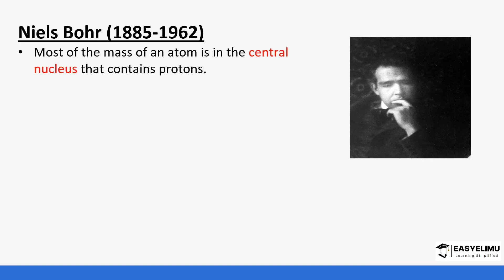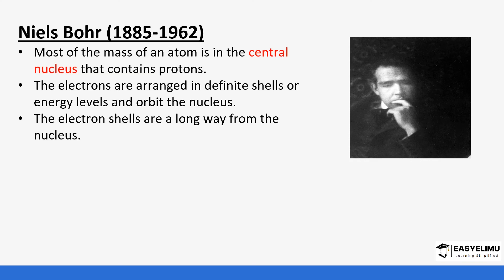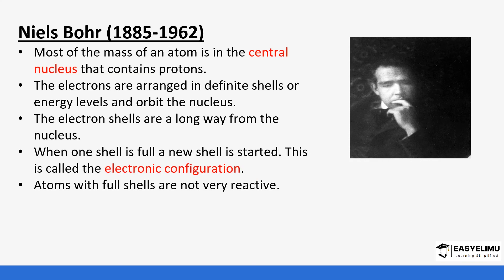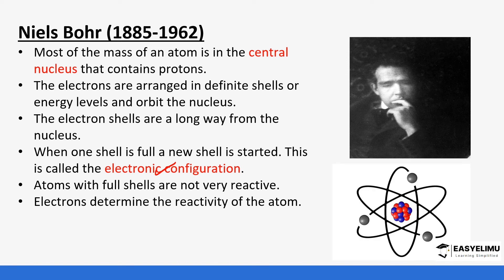Then came Niels Bohr, who specified the orbits as energy levels or shells. He talked about the mass of the atom being majorly concentrated in the nucleus, which contained protons. Electrons were arranged in energy levels or shells, filling one shell at a time before moving to the next — this was referred to as electronic configuration. He also said that atoms with full shells were not very reactive, and that electrons determined the reactivity of an atom.